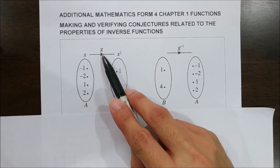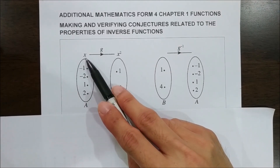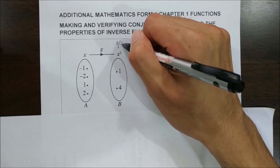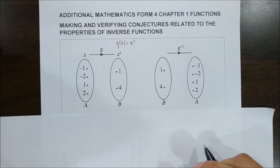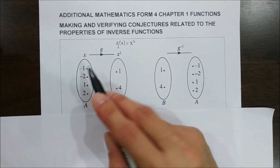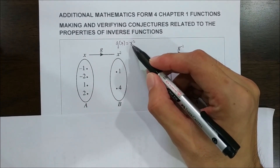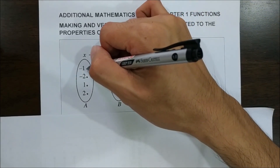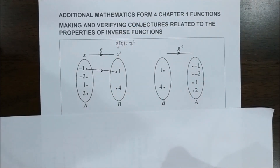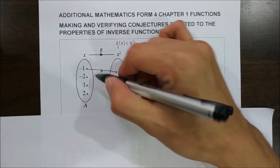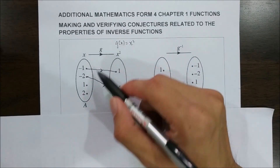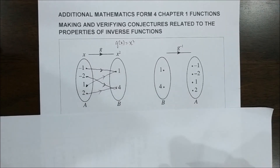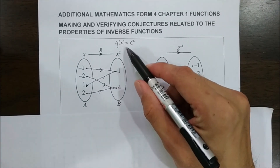We are given a function g(x) = x². So g(-1) = (-1)² = 1, meaning -1 maps to 1. Then g(-2) maps to 4, g(1) maps to 1, and g(2) maps to 4, according to this function.